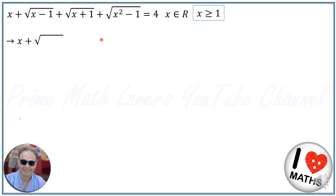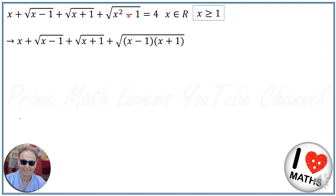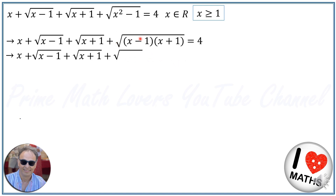For solving this problem, we write the equation down again, and instead of X squared minus 1, we write X minus 1 times X plus 1. This comes from the difference of squares identity from algebra. We then write the equation down again and separate those two terms as radical X minus 1 times radical X plus 1.